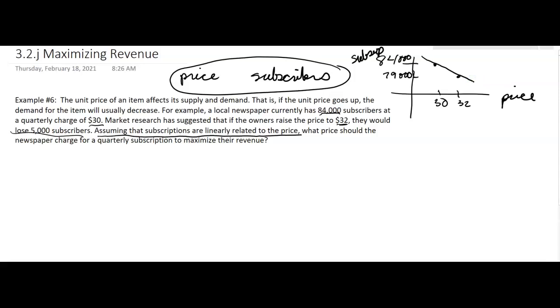Because it's linear and we have two points, we can find the equation of that line. So let's talk about the slope as being 79,000 minus 84,000 over $32 minus $30. That's going to be negative 5,000 over 2 or negative 2,500. This makes sense because as the price goes up, the subscriptions are going down, so this is a decreasing line.